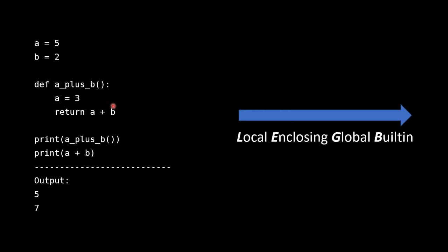Now we need to find b. B is not defined locally — it's only defined globally. So Python goes searching for b, goes upward, doesn't find it locally. There's no enclosing function here, so it goes straight from the local namespace to the global one, where it finds b equals two. So we have a equals three and b equals two — that's three plus two, which equals five.